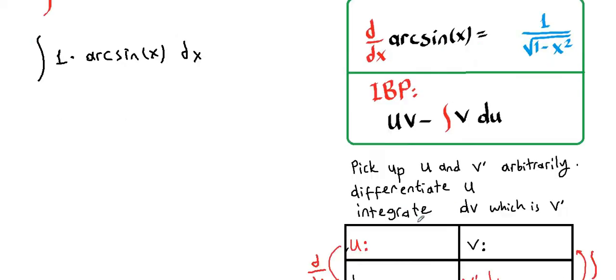Now, one of the functions will be our u, and the other function will be our v prime, which is dv. Whichever is differentiable easily will be our u. Whichever is integrable easily will be our dv or v prime.